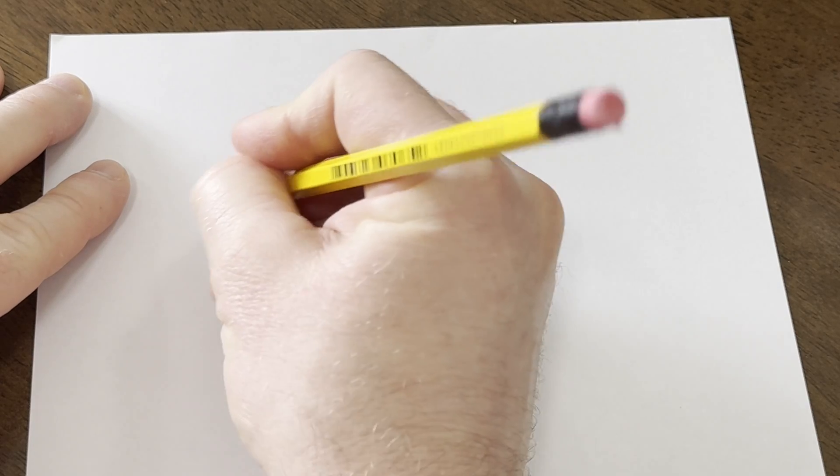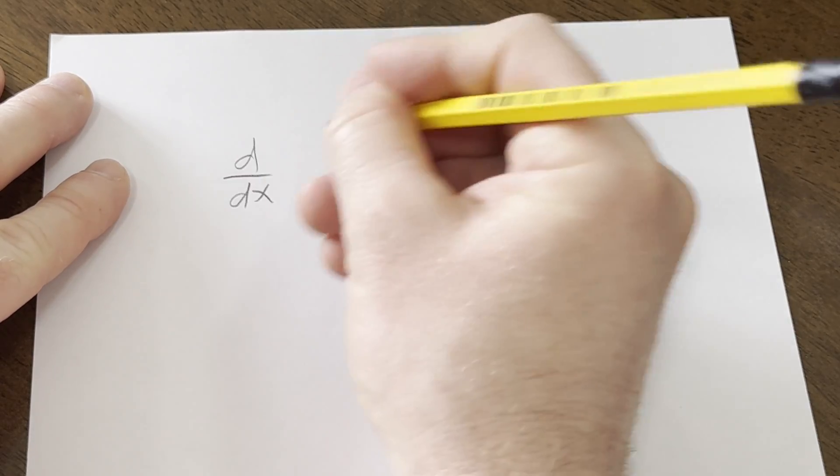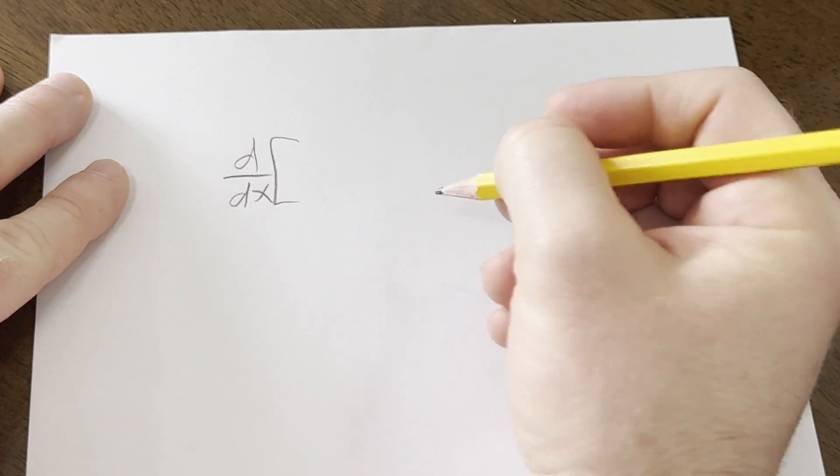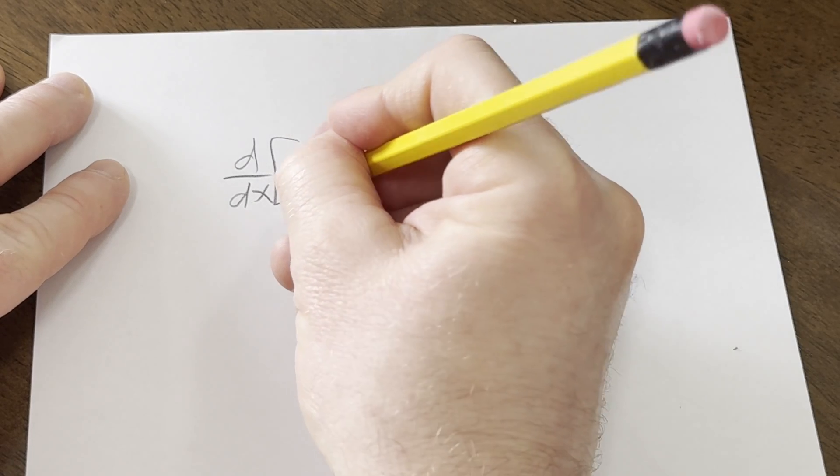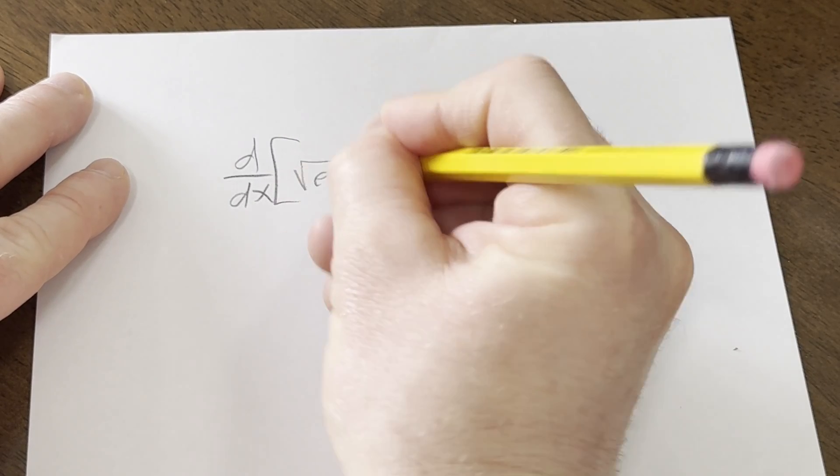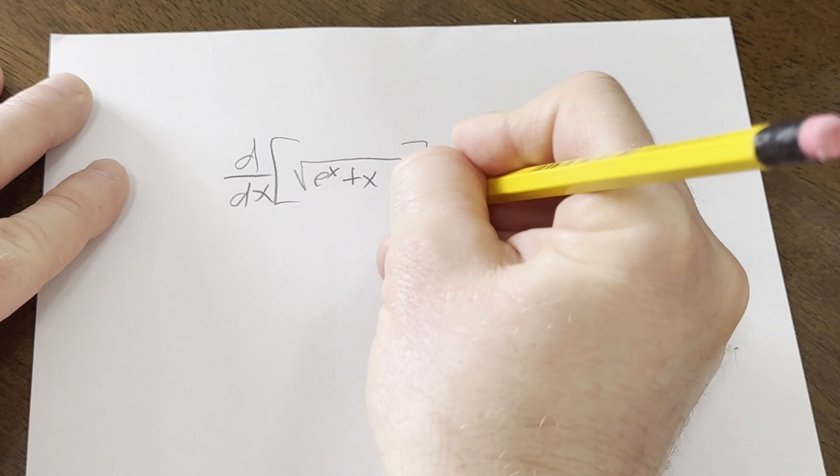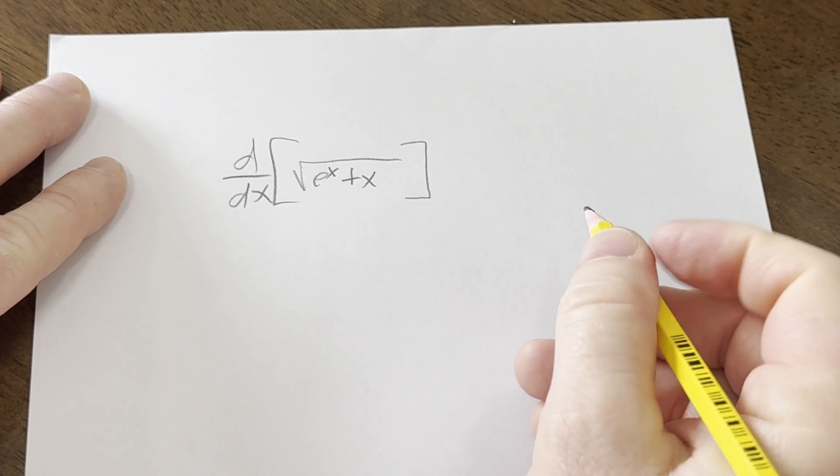In this video, we're going to do an example of computing a derivative. You're going to find the derivative of the following function. So d/dx means take the derivative of whatever I put here. So here we're going to write square root of e to the x plus x. We're going to take the derivative of this function here.